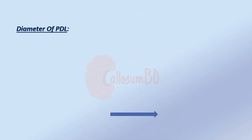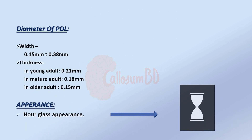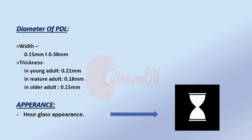Regarding the diameter of the periodontal ligament: its width is 0.15 mm to 0.38 mm. Its thickness is 0.21 mm in young adults, 0.18 mm in mature adults, and 0.15 mm in older adults. Its appearance is described as an hourglass appearance.